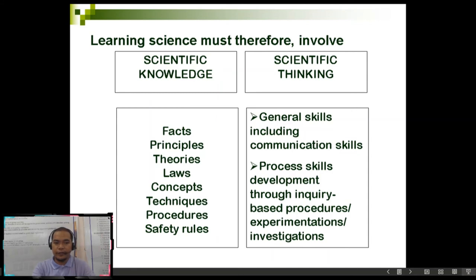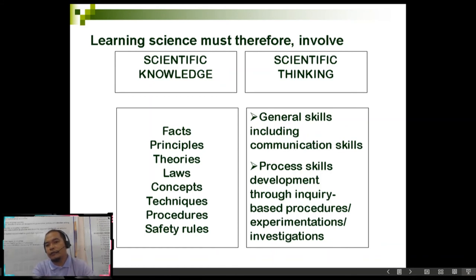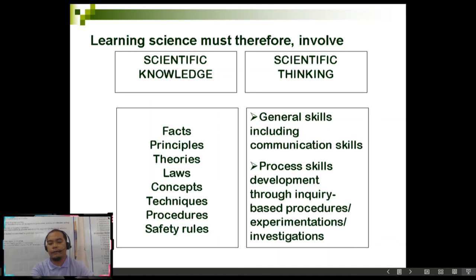So again, learning and doing science should involve scientific knowledge — what you do should be grounded on concepts, techniques, procedures, principles, and theories about science. You cannot just do whatever you think of without that foundation. And of course, scientific thinking involves skills and process — general skills plus practice in doing and learning science through proper experimentation, investigations, and procedures.